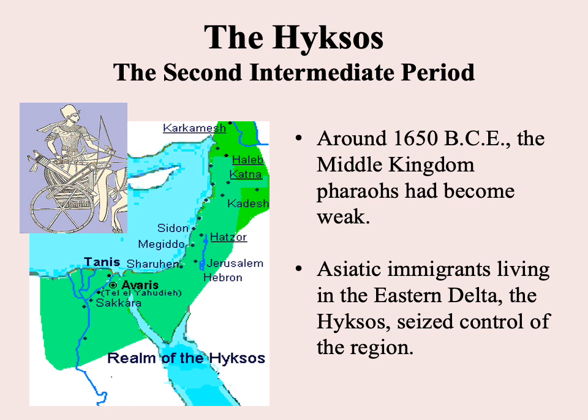The Middle Kingdom eventually comes to an end. This time we have one specific reason: an invading force, a people known as the Hyksos, who basically bring the Middle Kingdom to an end around 1650 BCE.